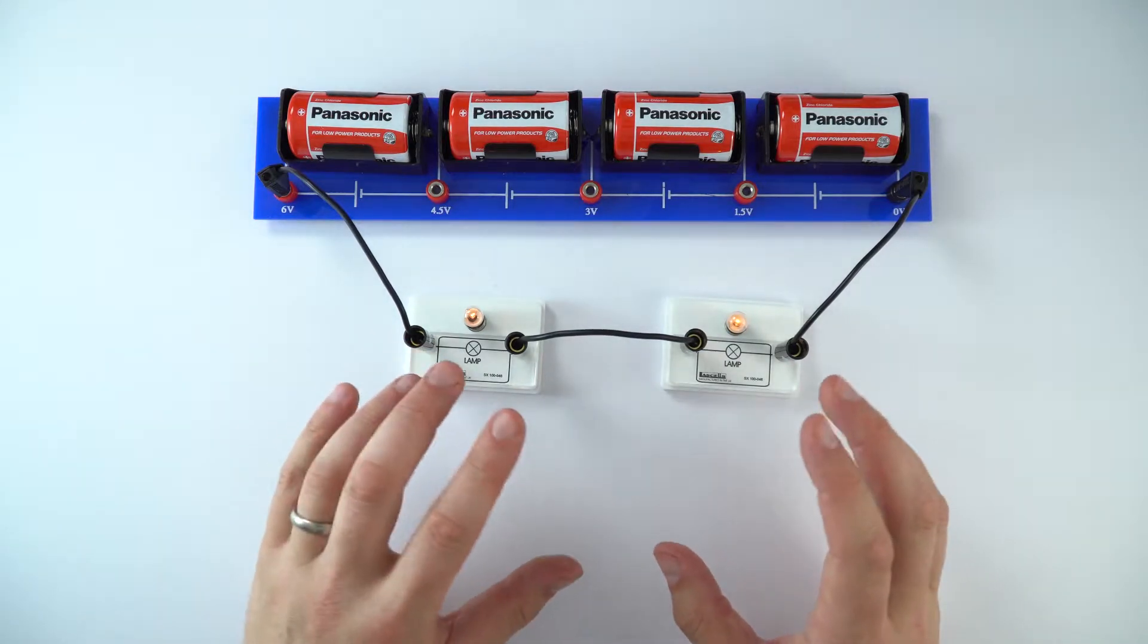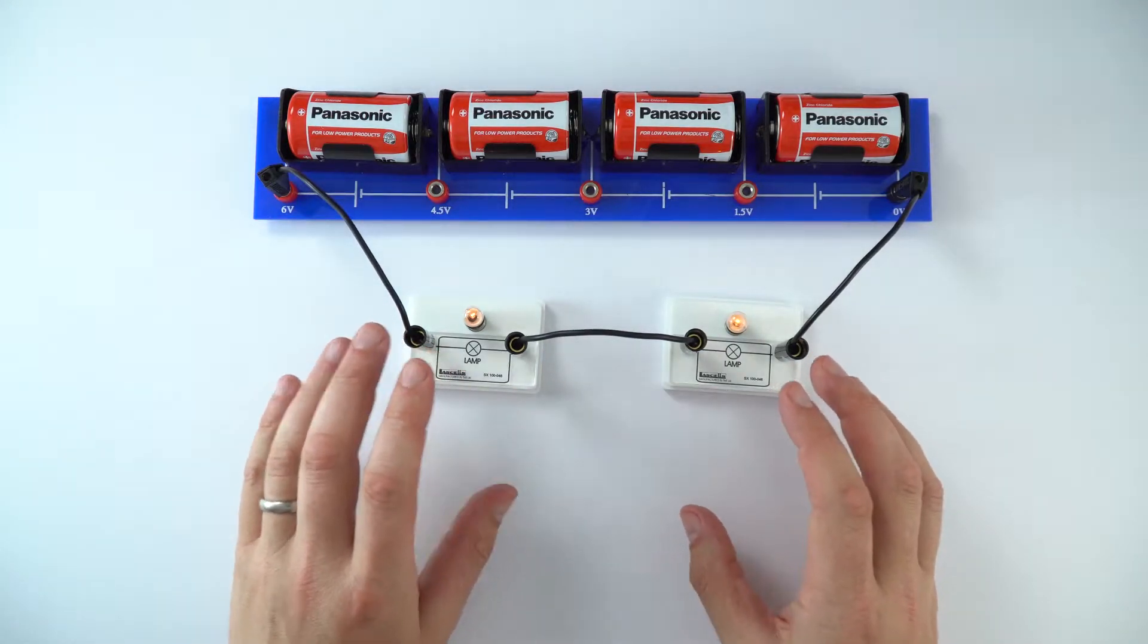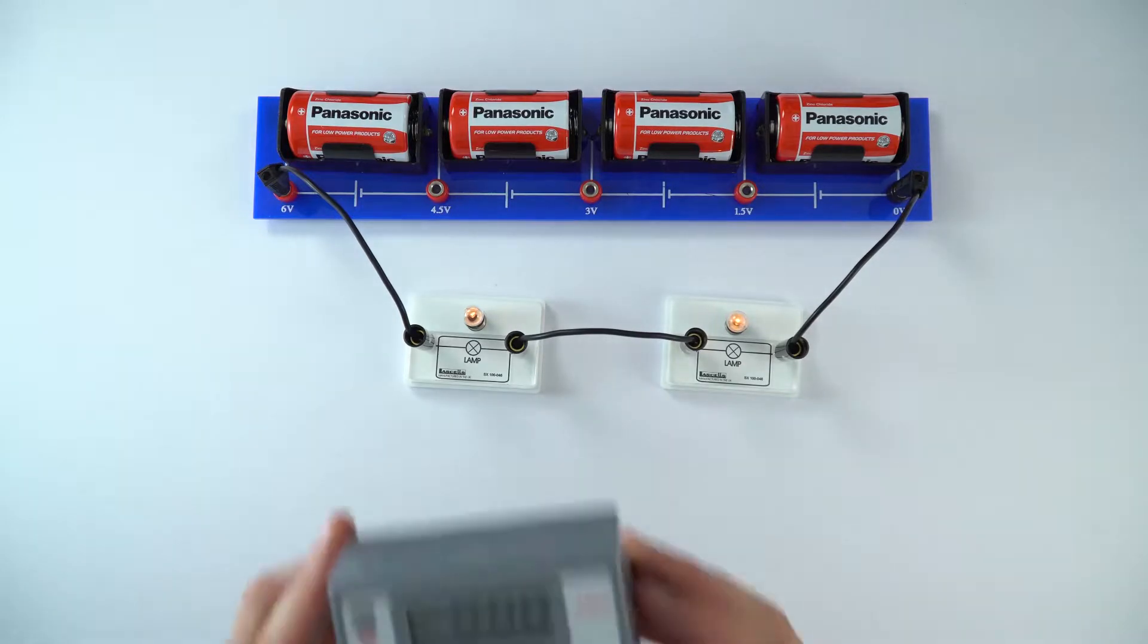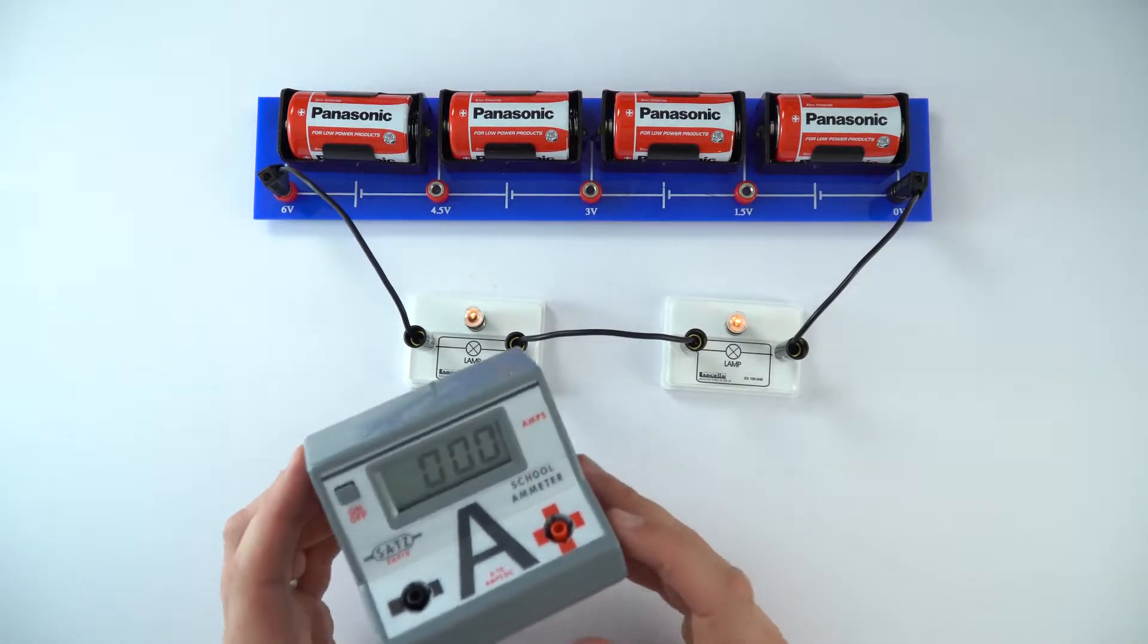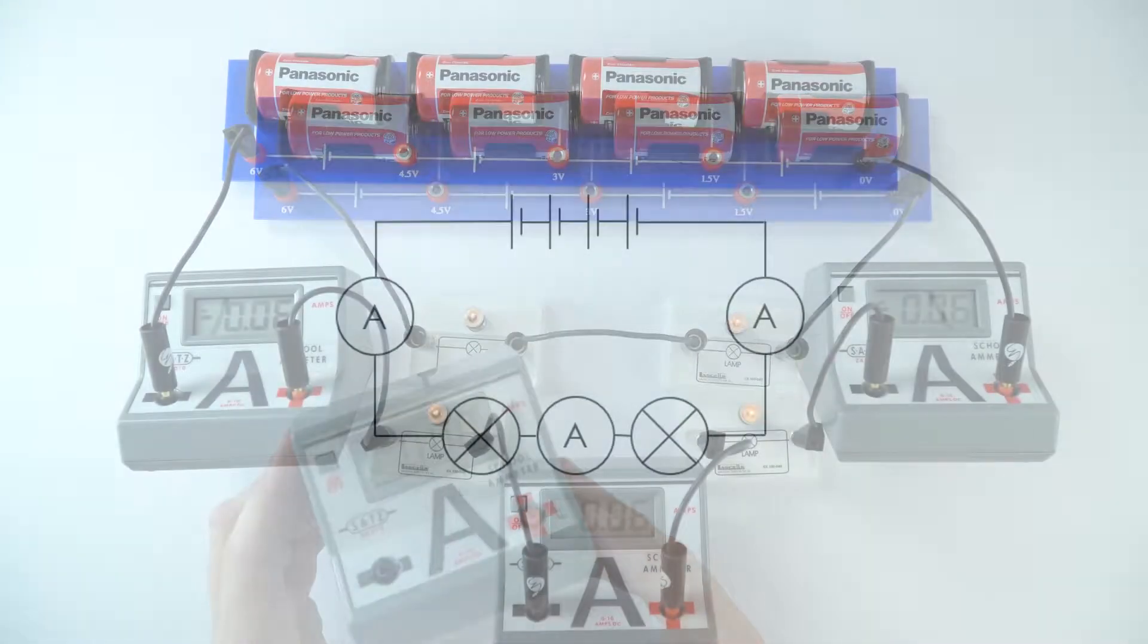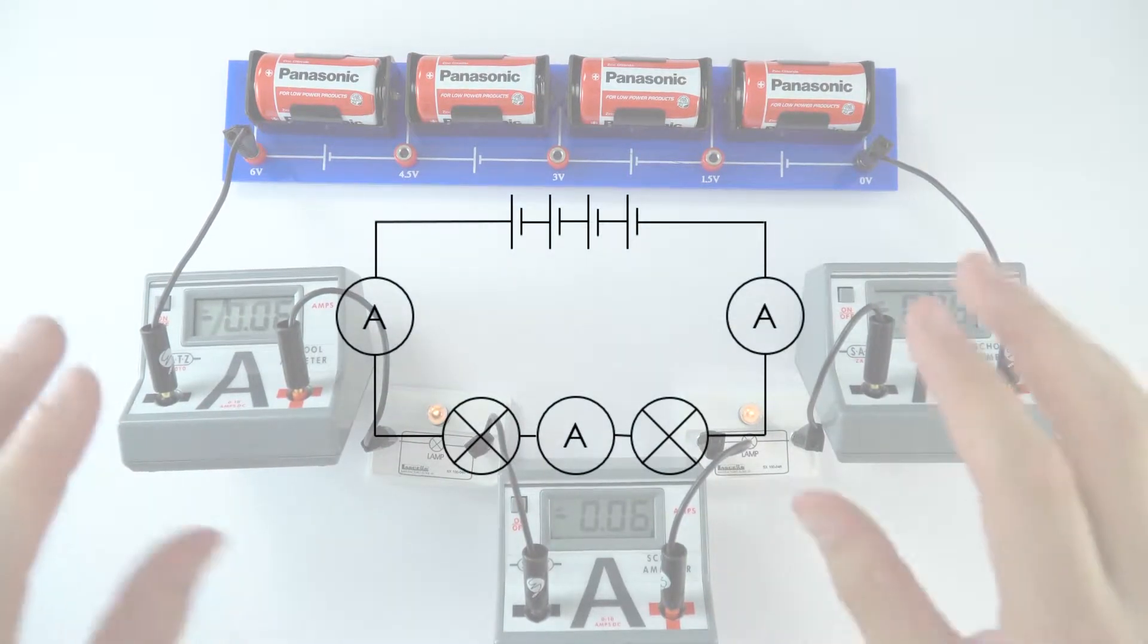What we're going to be looking at is the current in this series circuit and also the potential difference. So in order to investigate the current, what I have are some ammeters.